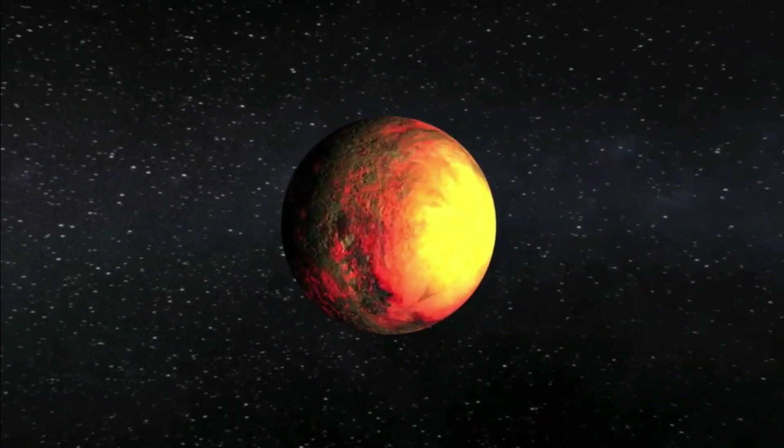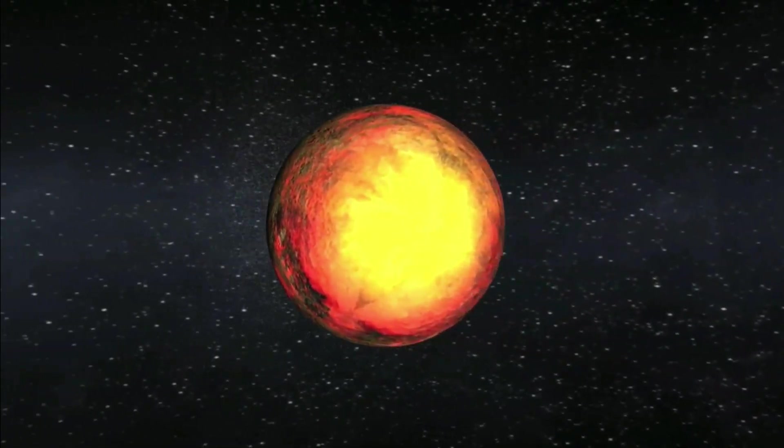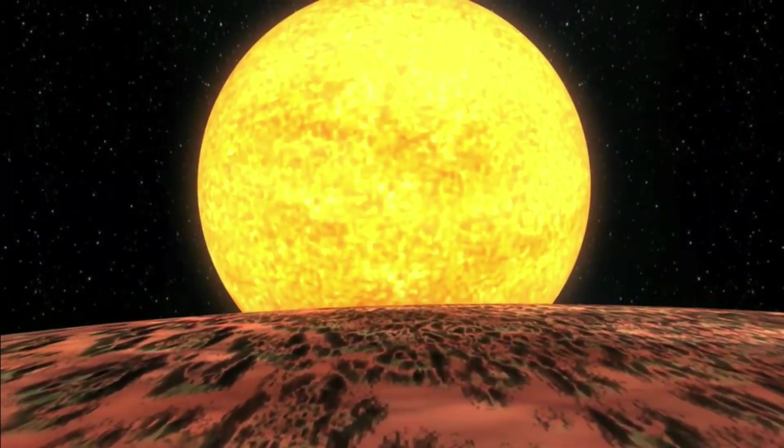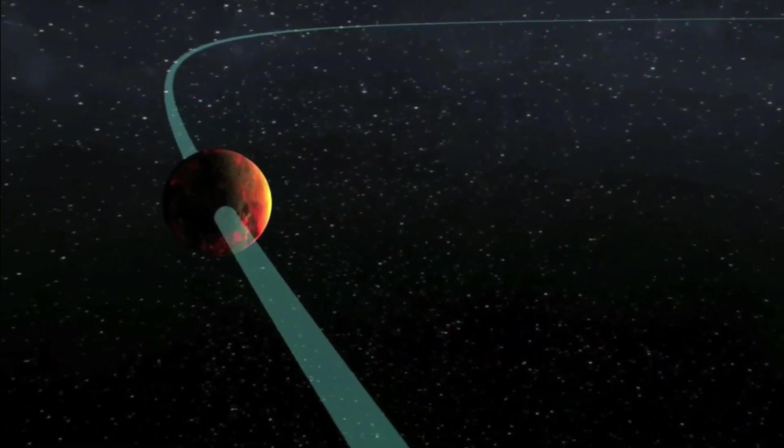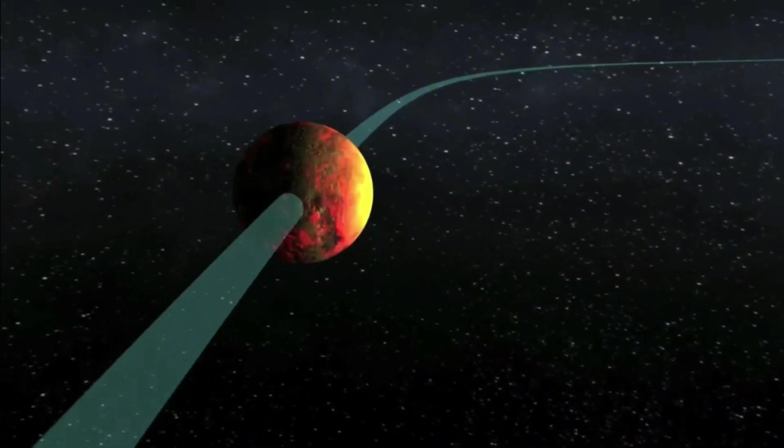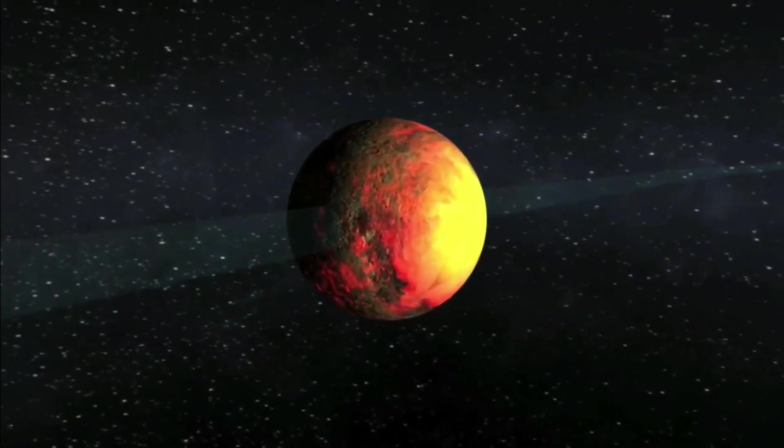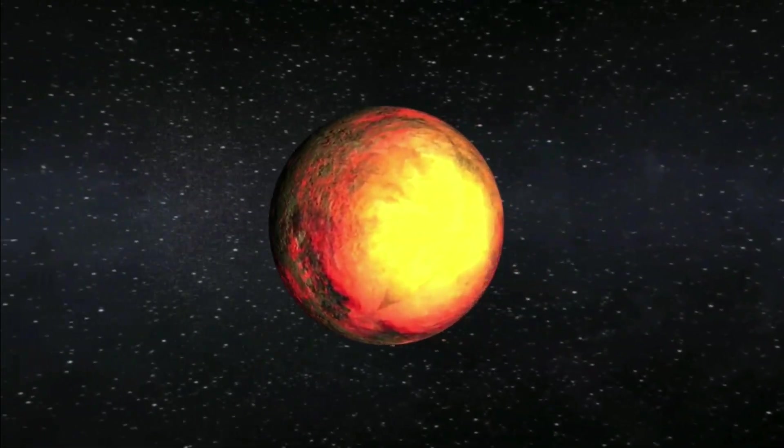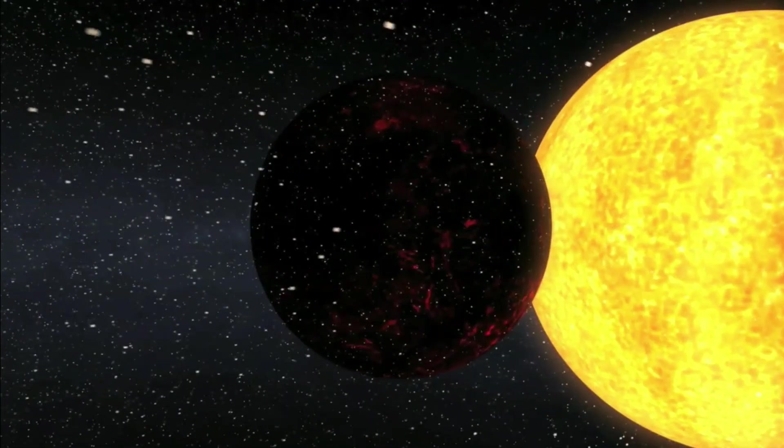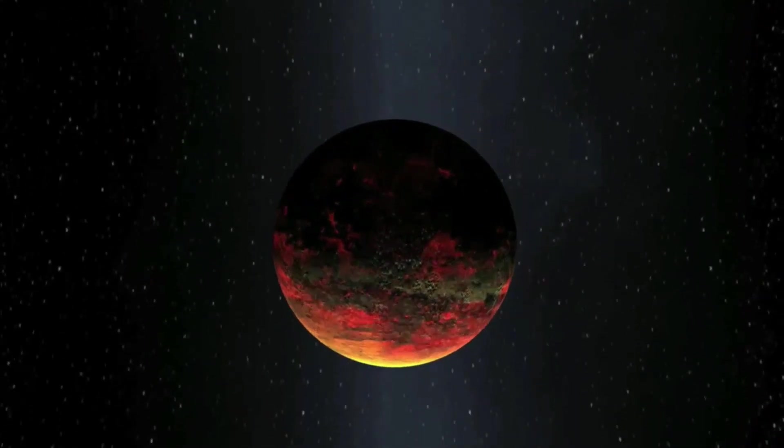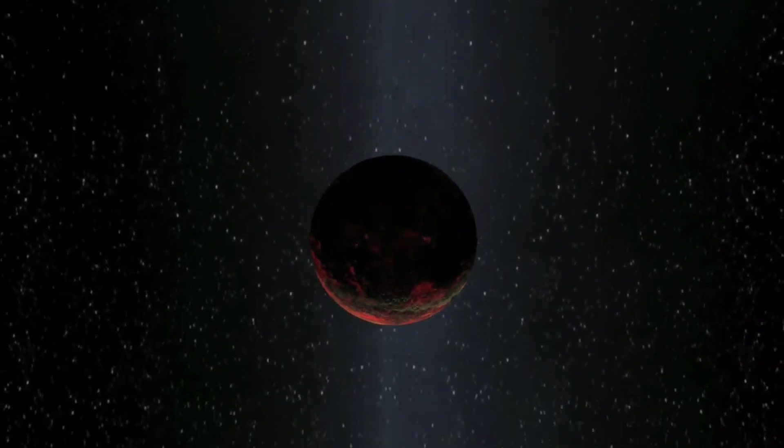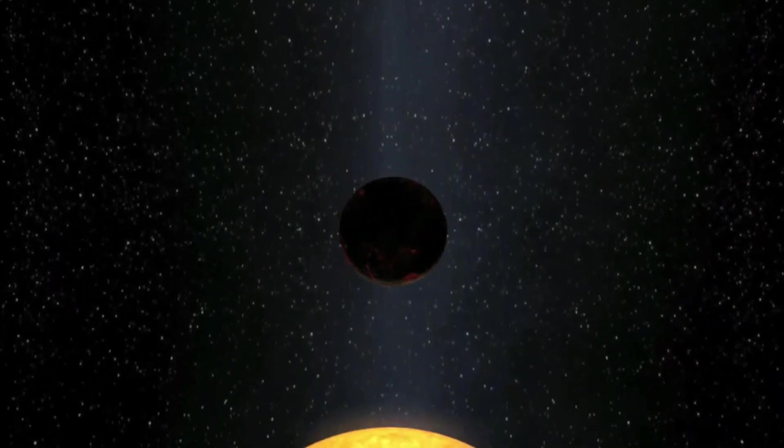Another exoplanet is Kepler-10b, which is more like our Earth due to its rocky surface. But can we habituate that place? Don't even think about this. This alien planet only takes 20 hours to complete its one orbit around its star. The proximity between the planet and its host star is incredibly high, which means a boiling temperature of 2500 Fahrenheit. Only one side of the planet faces this star as it is tidally locked with its host star.